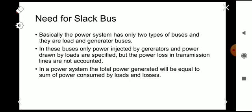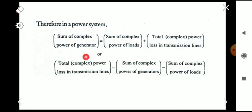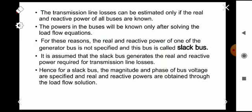The need for a slack bus arises because a power system has only two types of buses — load bus and generator bus — where only power injected by generators and power drawn by loads are specified (PG, PD, QG, QD). But the power losses in transmission lines are not accounted for. The total power generated equals the sum of power consumed by loads plus the losses. Transmission line losses can be estimated only if the real and reactive power of all buses are known, and the powers in the buses are known only after solving the load flow equations.